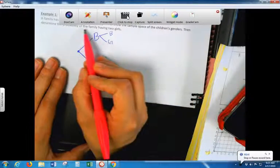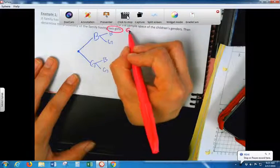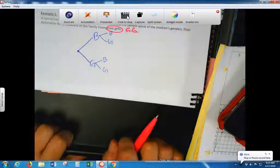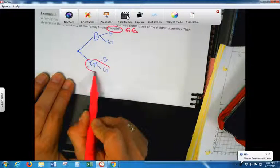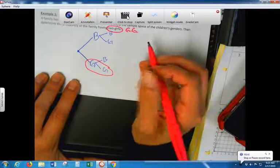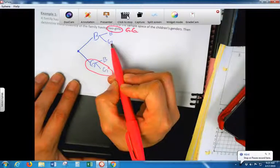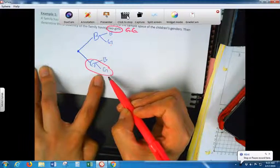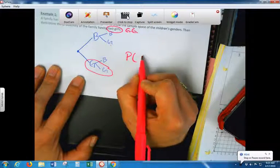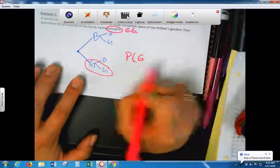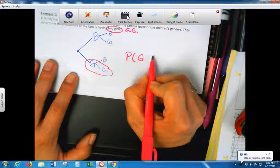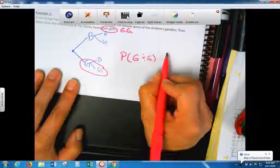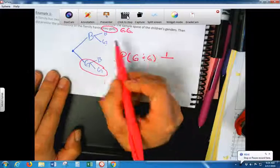Now, determine the probability of getting two girls. So I'm looking for girl, girl. Circle it. Where do you see girl, girl? You should have circled that, right? So because this one is not girl, girl, this one's boy, girl, right? And this one is girl, boy. But this one's girl, girl. So what's the probability of getting girl, girl? How many times did it appear? One. Out of? Four. One, two, three, four.